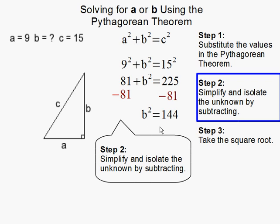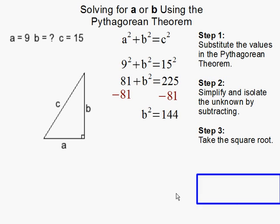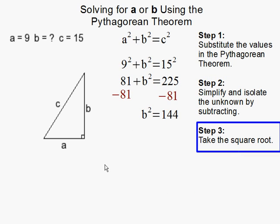So, B² is equal to 144. I'm not quite done yet. And finally, the next step, and the final step, is to take the square root.